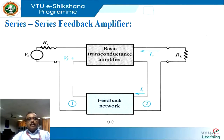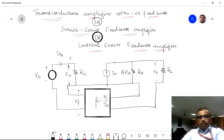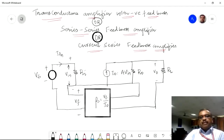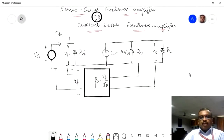Let us move on to the first: the series-series feedback amplifier. In this topology, you have current at the output and voltage at the input. We will derive the expression for RIF and ROF, likewise ZIF and ZOF — the input and output resistances or impedances for a trans-conductance amplifier with negative feedback, also called a series-series or current-series feedback amplifier.